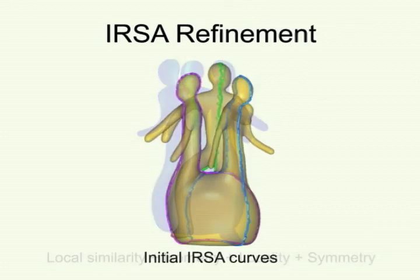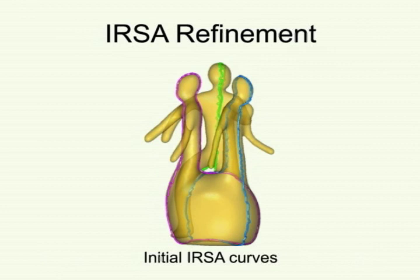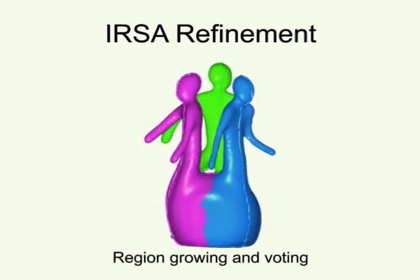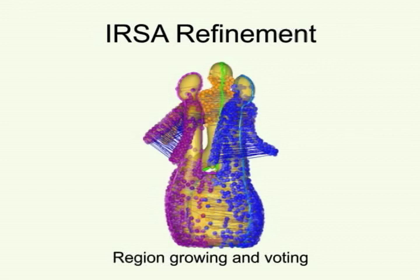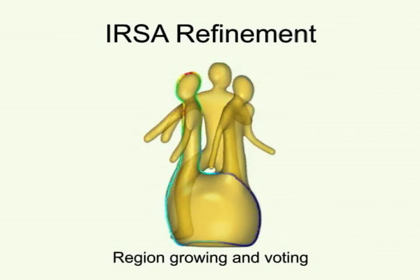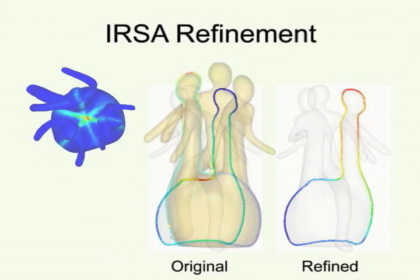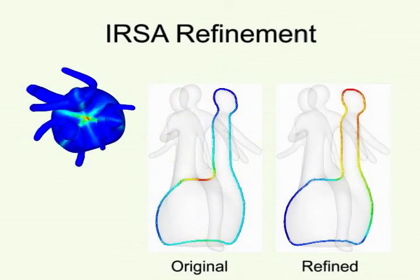Given the IRSA transform, we first extract an initial set of IRSA curves. Then we iteratively refine the local symmetry support measures along the IRSA curves by combining region-growing with voting. This can greatly improve the accuracy of symmetry support measures and help resolve difficult issues such as the handling of rotational symmetry in partial intrinsic reflectional symmetry analysis. For more technical details, please refer to the paper.